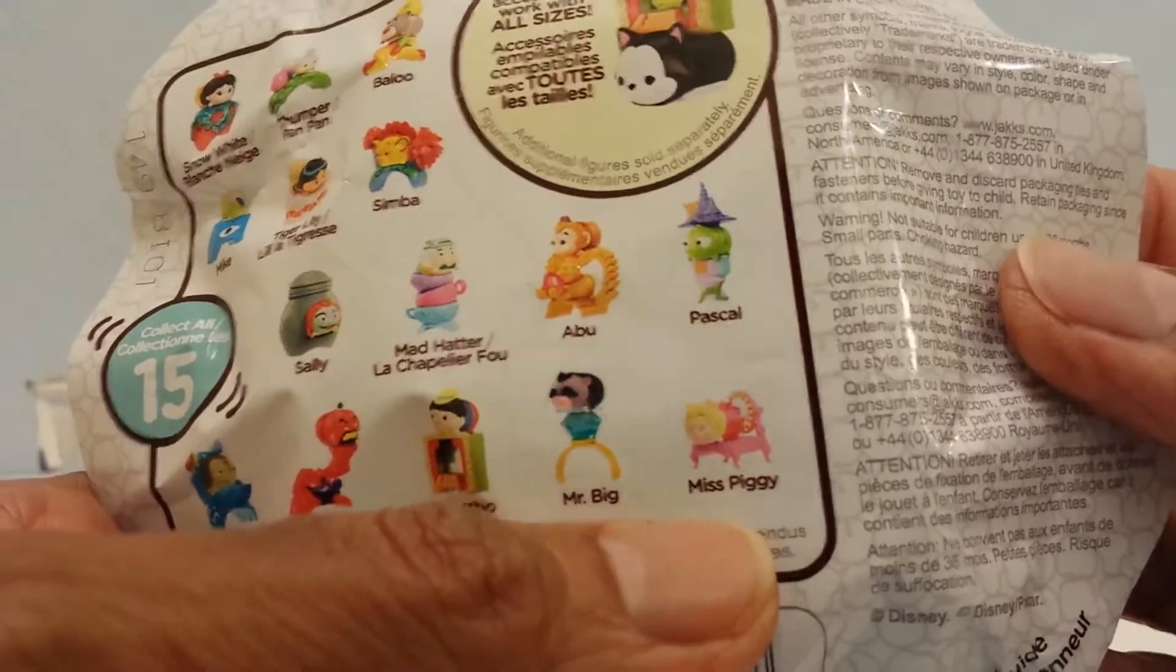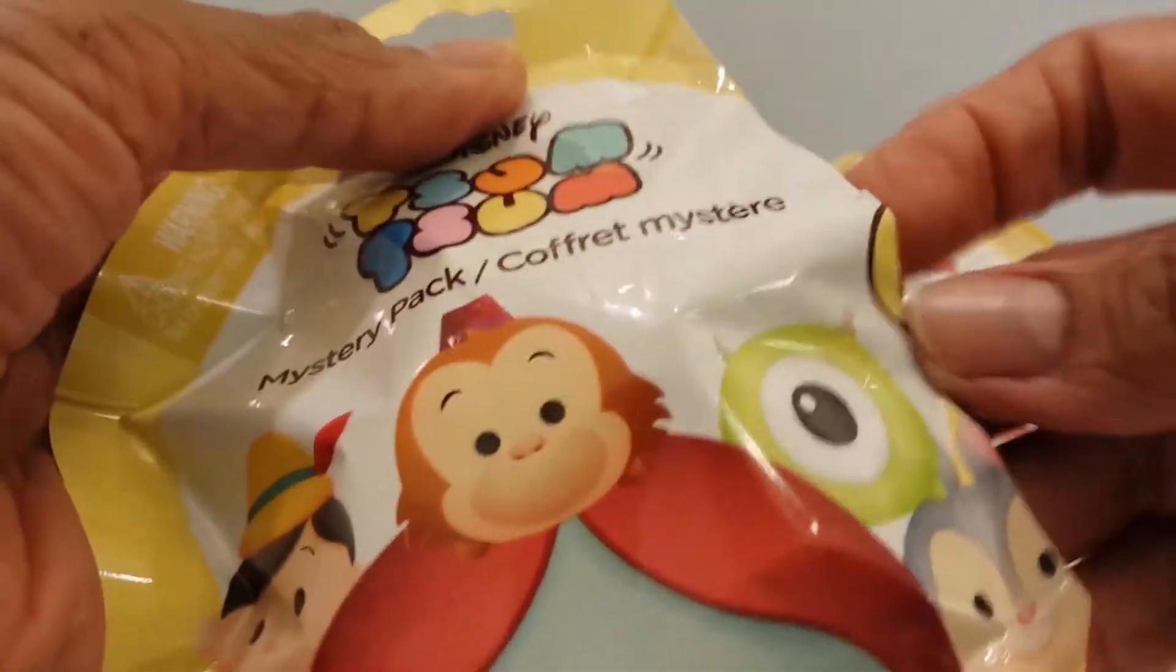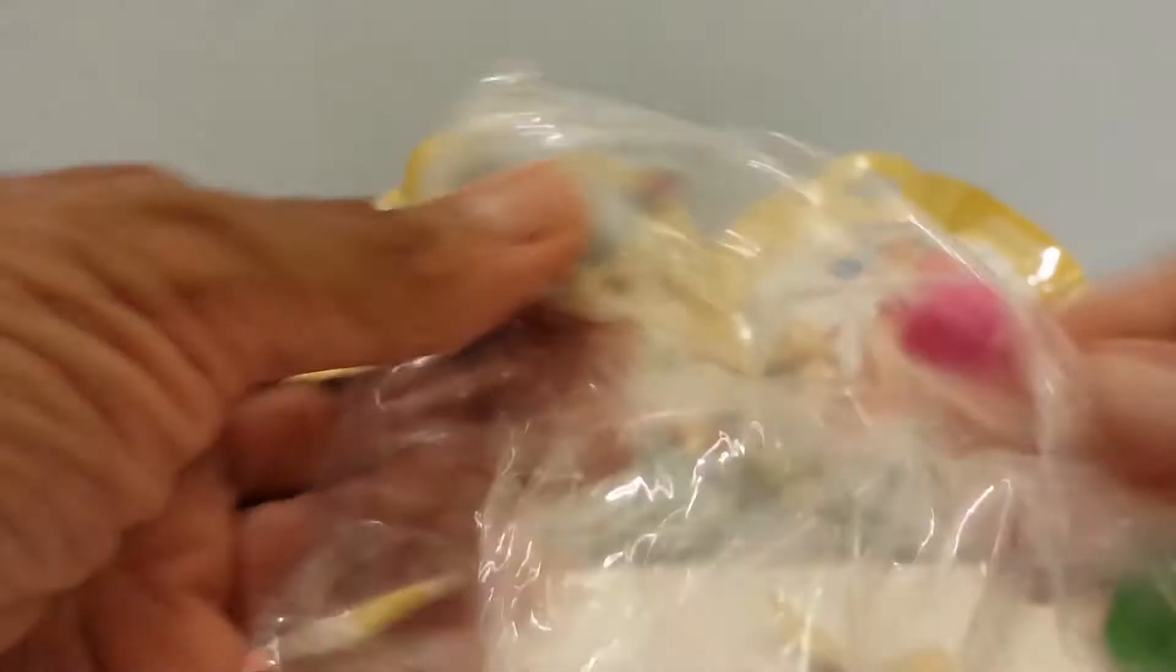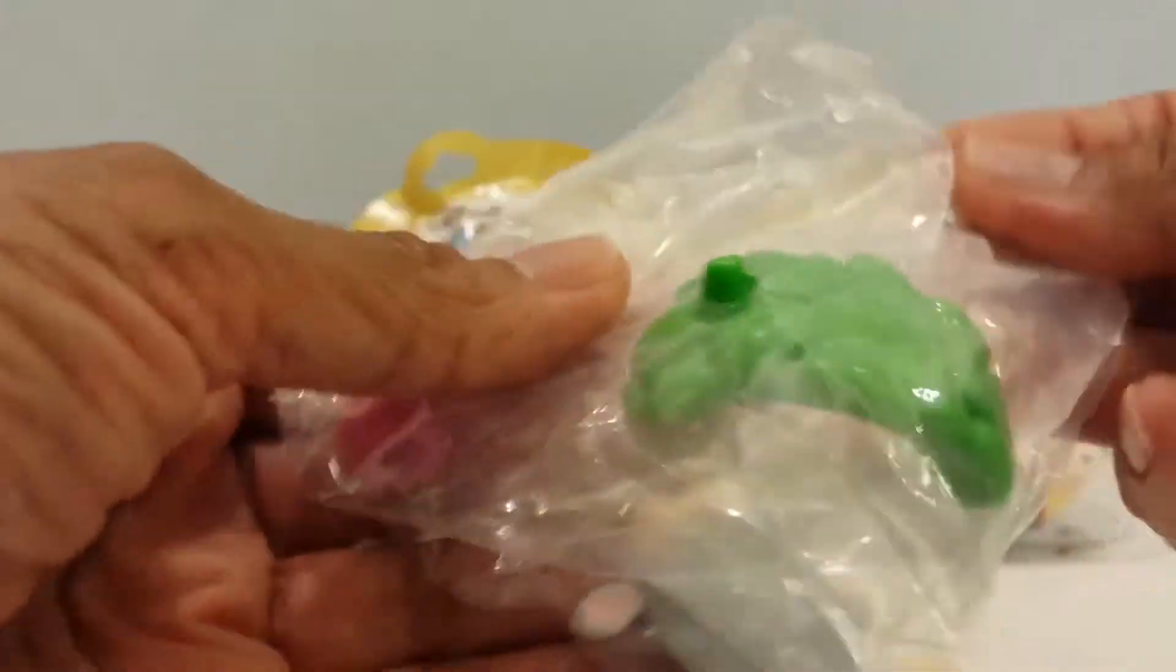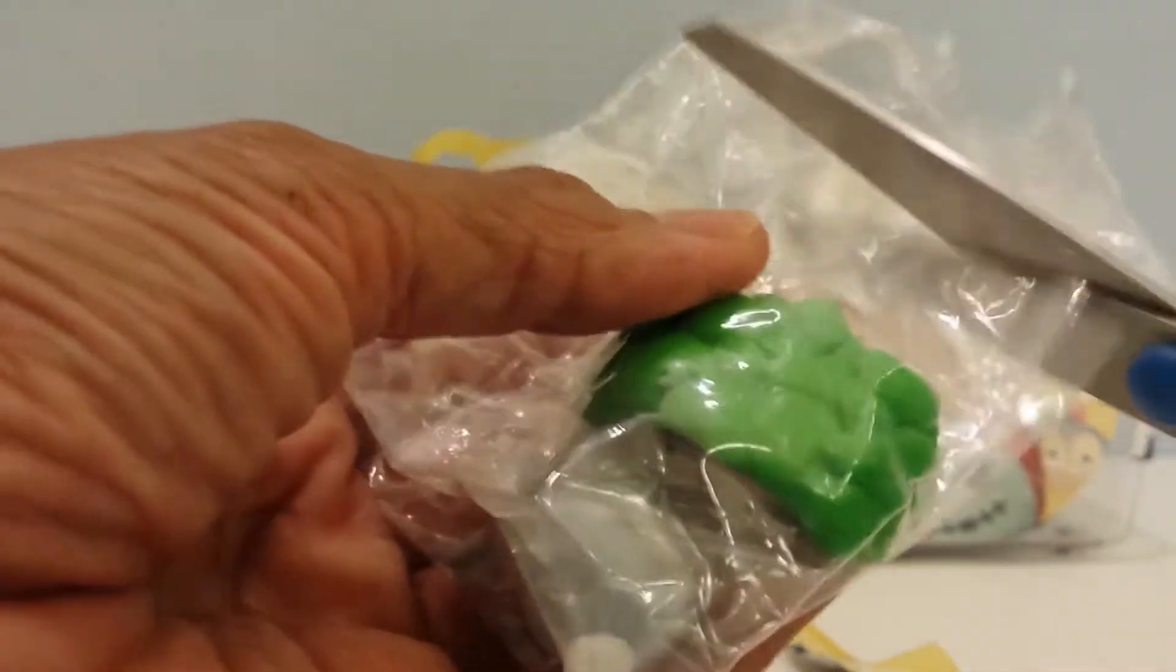So let's see who we have in this first bag. The ones that I don't have, that's who I'd like. Let's see, it comes with a checklist. Oh, we have Thumper!